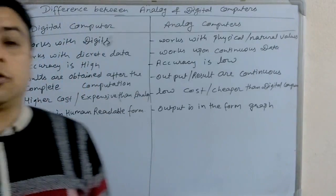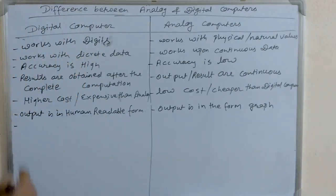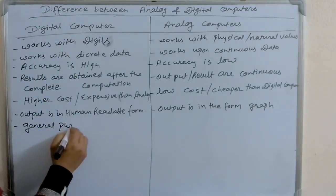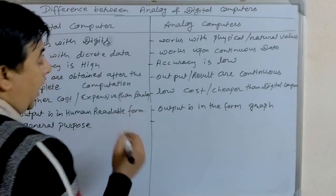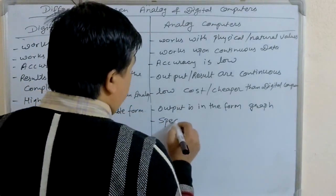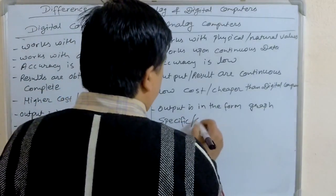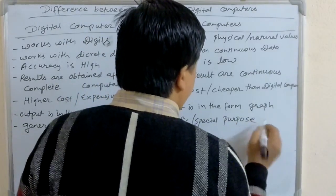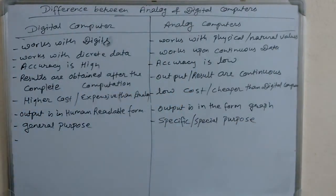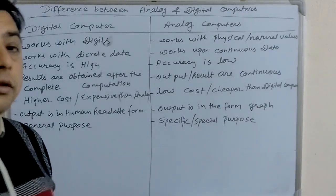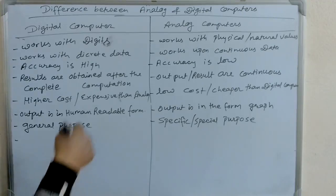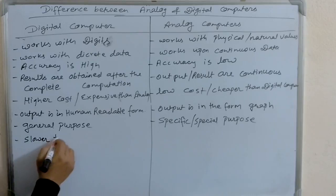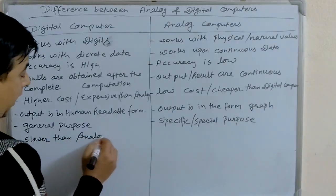Digital computers are used for general purpose, while analog computers are used for specific or special purpose. Digital computers are slower compared to analog computers.